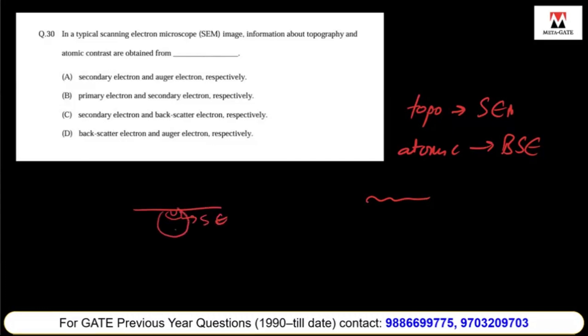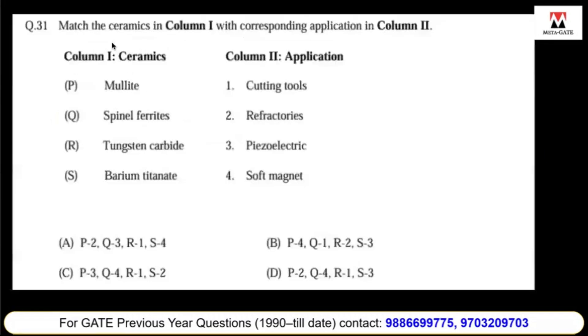Match the ceramics in column one with corresponding applications in column two. Mullite, spinel ferrites, tungsten carbide, and barium titanate. Mullites are generally ceramics used in refractories. Spinel ferrites are used in soft magnets. Tungsten carbide is the hardest element, so it's used in cutting tools. Barium titanate is used as a piezoelectric material. So it's two, four, one, three.